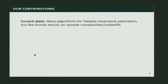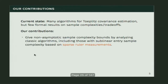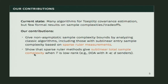So what's the current state? There are lots of algorithms for estimating Toeplitz covariance matrices, but as far as we can tell, there are few formal results on what these sample complexities are and what the trade-offs between them look like. Our contribution is to give non-asymptotic sample complexity bounds by analyzing some classic algorithms, and some of our bounds will actually achieve sublinear sample complexity based on a classic combinatorial technique called sparse rulers.